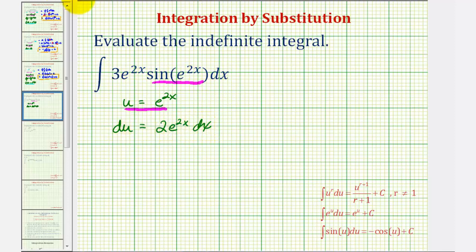To simplify this substitution, let's divide both sides of this equation by 2. Now we have one-half du equals e to the 2x dx.